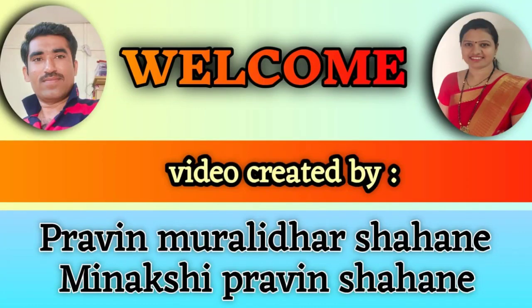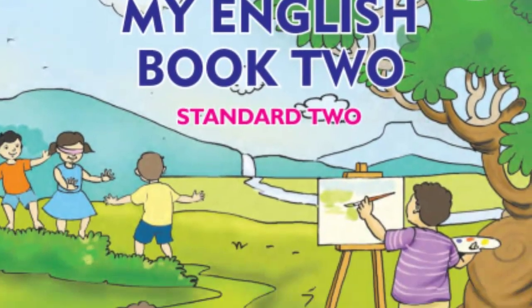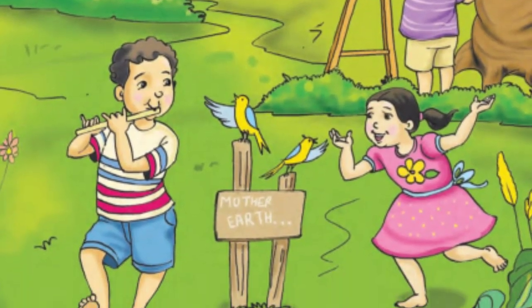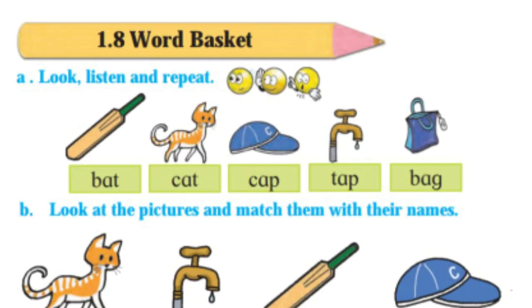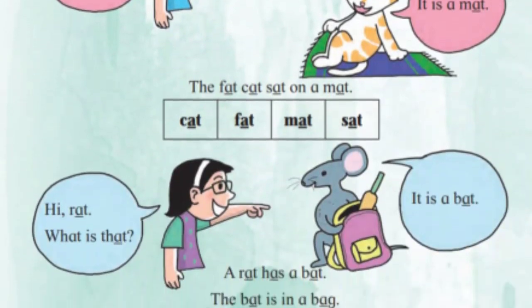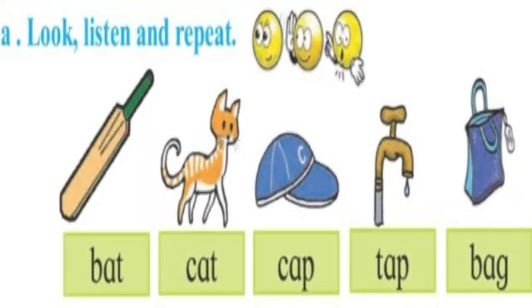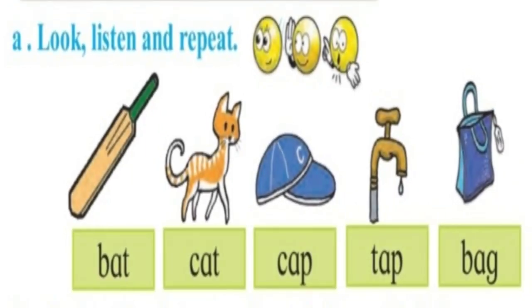Hello students, today we will learn second standard subject English. 1.8 Word Basket. Activity A: Look, listen and repeat.